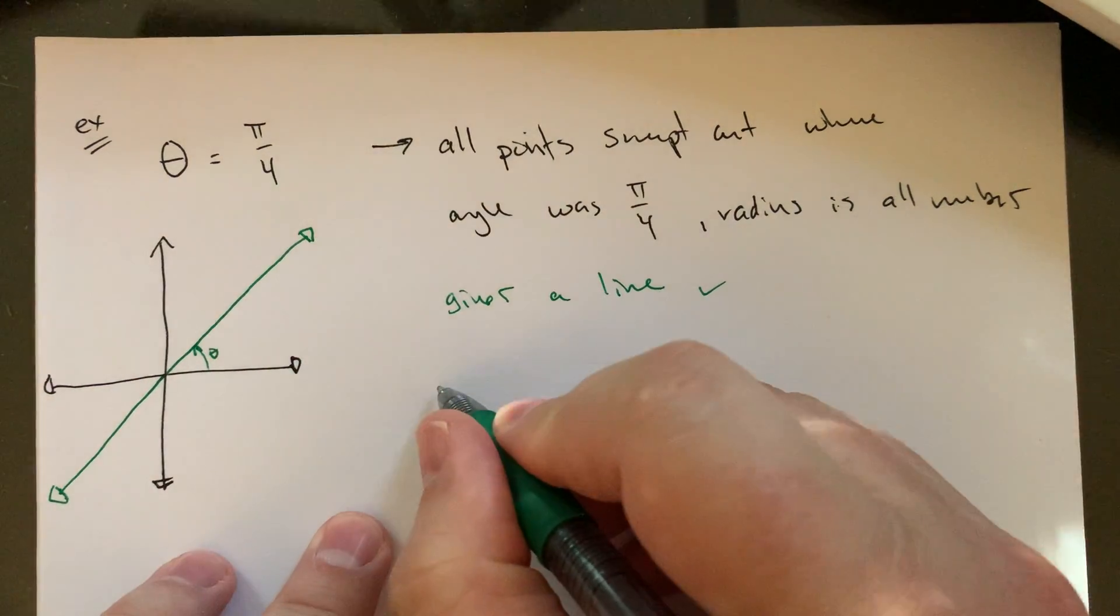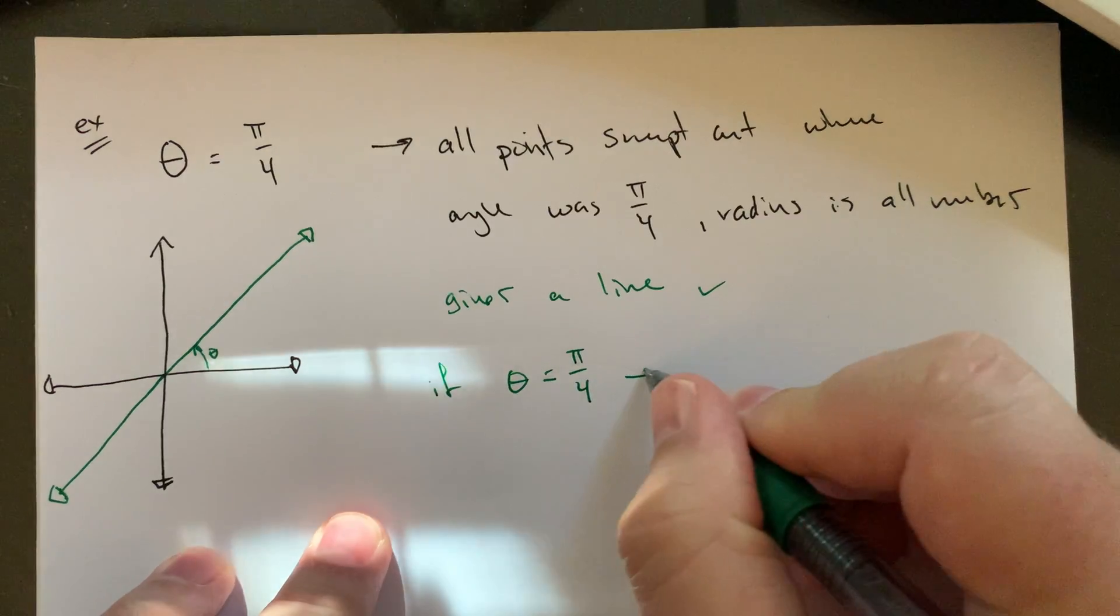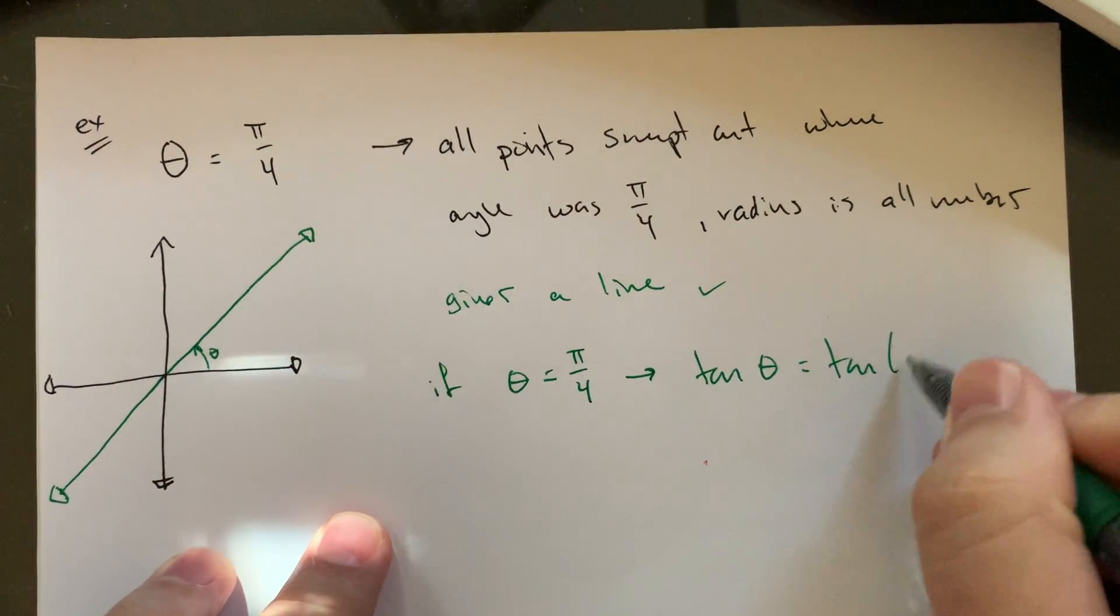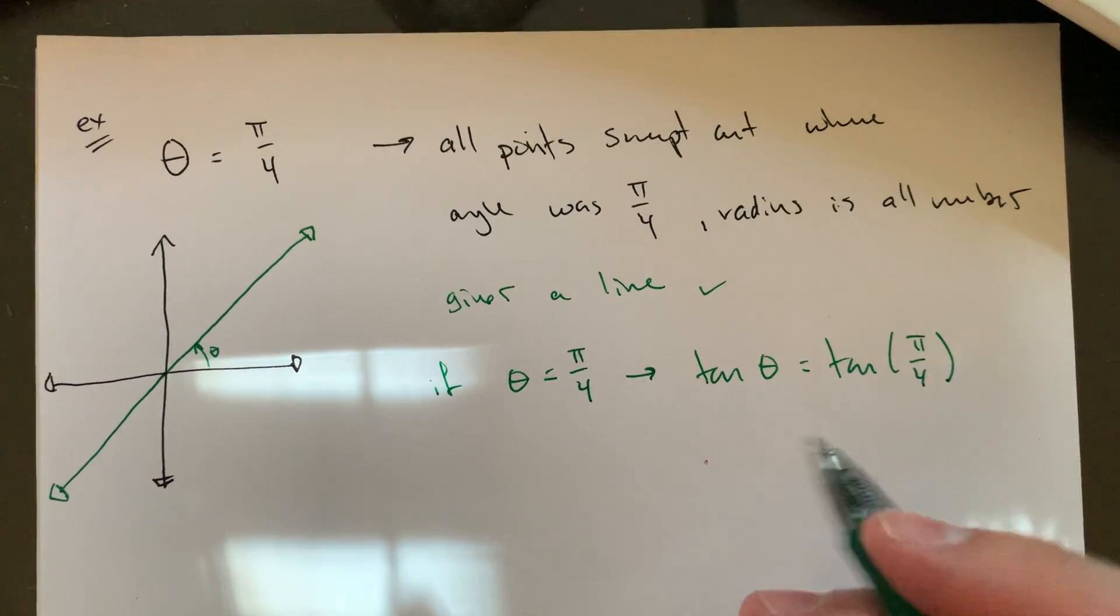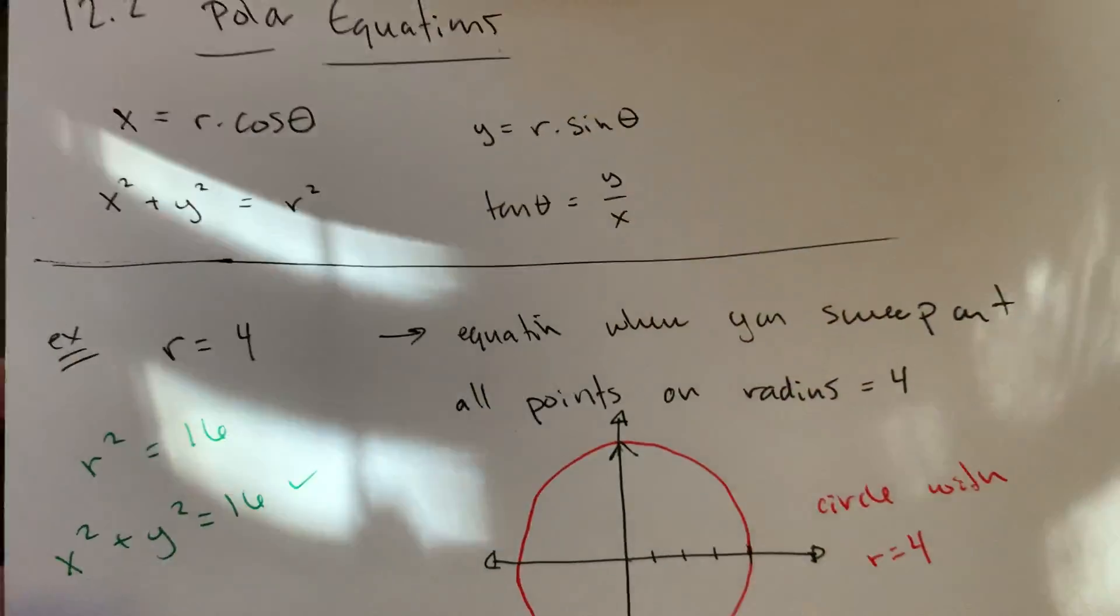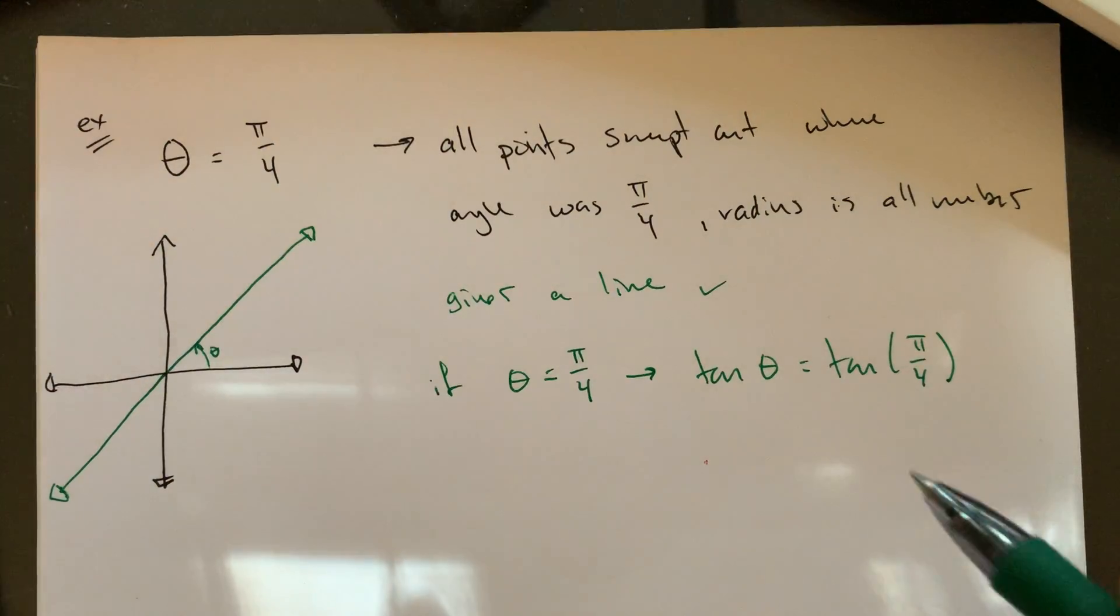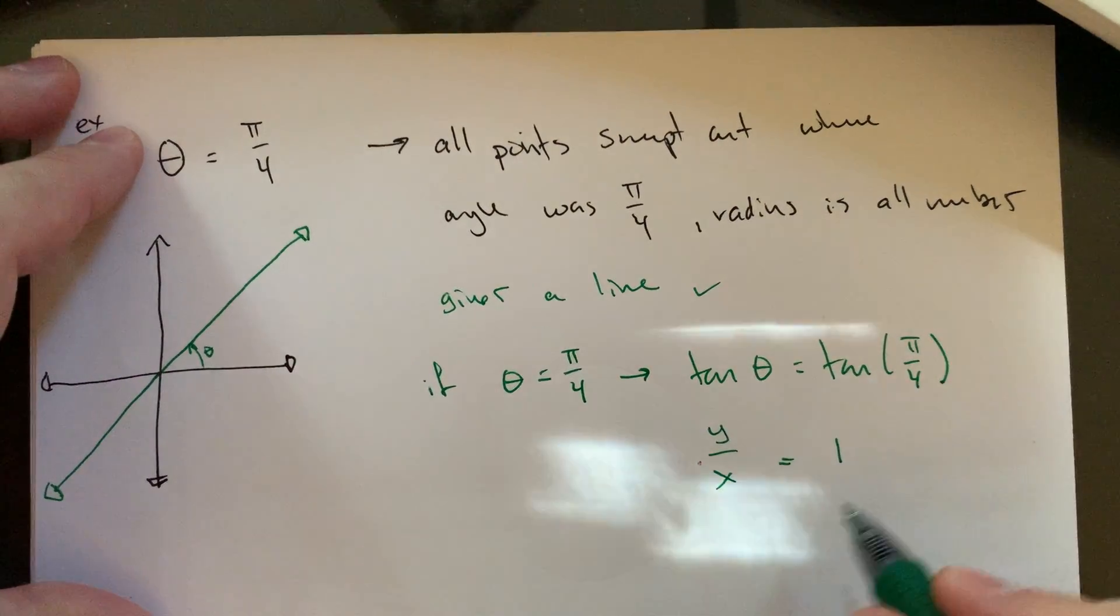What you could do is say, so if theta is pi over four, then that means tangent of theta would be tangent of pi over four. And we know tangent of course is y divided by x. So this means y divided by x would equal tangent of pi over four is one.